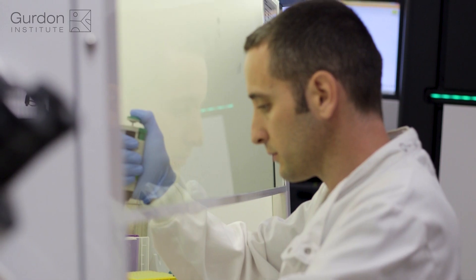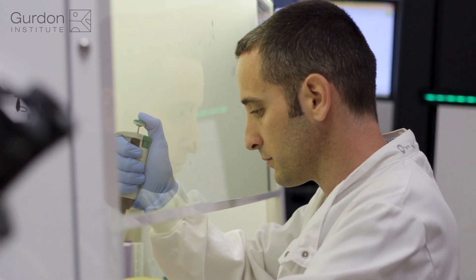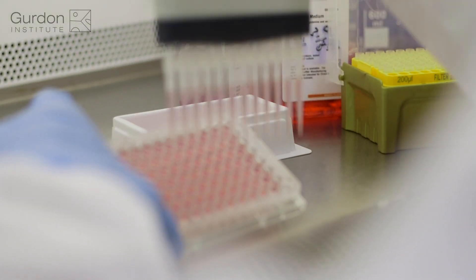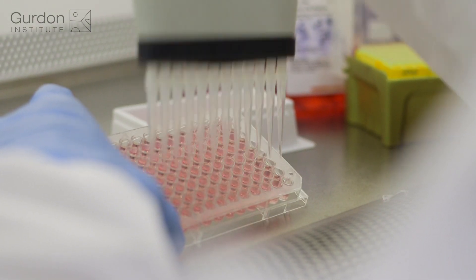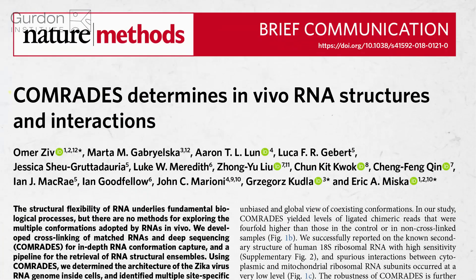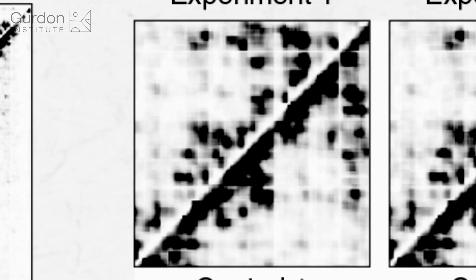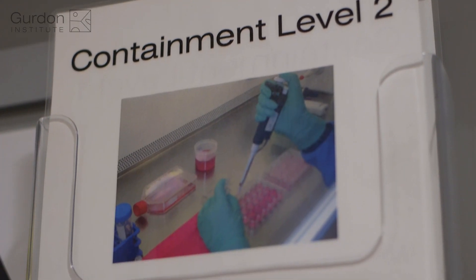The big challenge is that these structures might not be very stable. Once you extract the RNA from the cell in order to study it, you already disrupt most of the structure. So what we have been doing is finding ways to fix the structure of the virus genome — to take a screenshot, in a way — so that when we extract and study it, we can still preserve and identify those important structures.